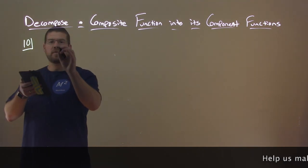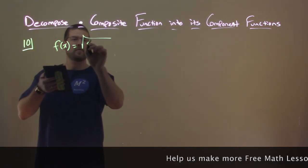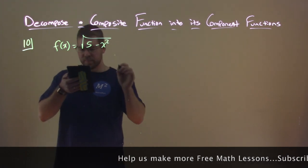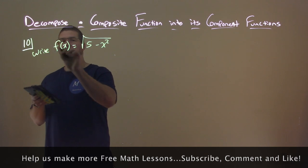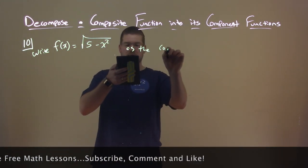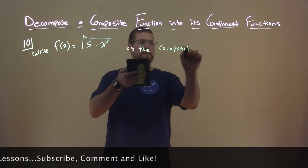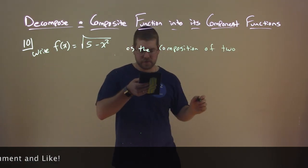So we're given this function f(x) equals the square root of 5 minus x squared, and we want to write this as the composition of two functions.